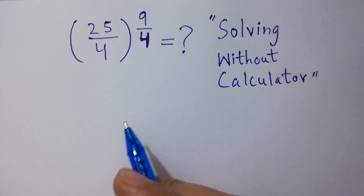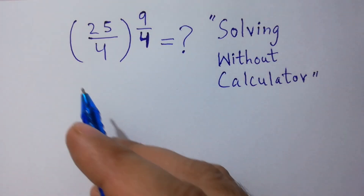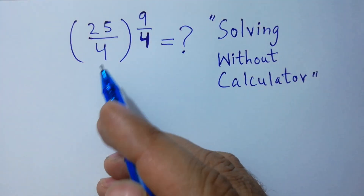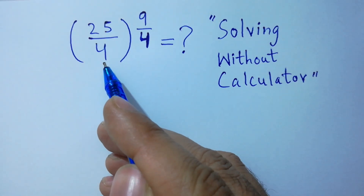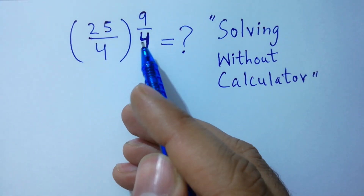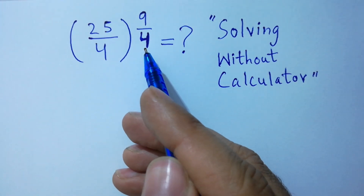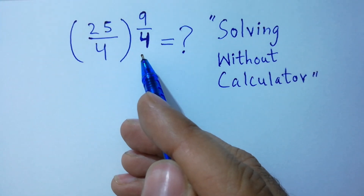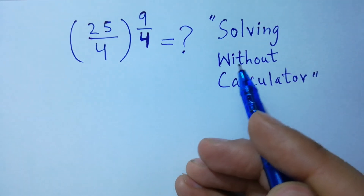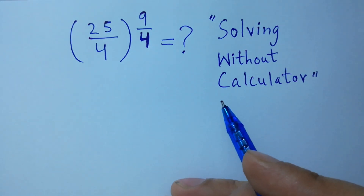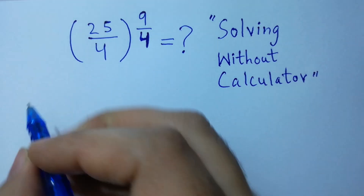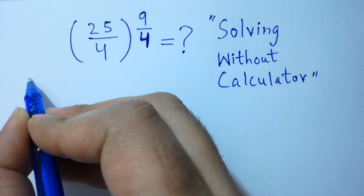Hello friends, can you solve this: (25/4) to the whole power 9/4, solving without a calculator? Let's have a solution.